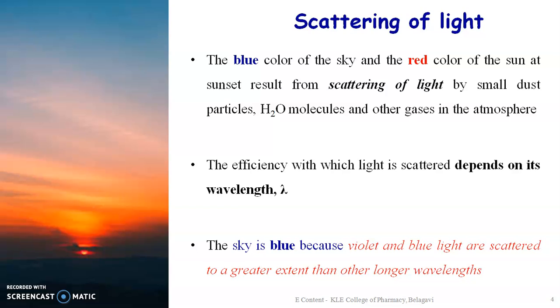The efficiency with which light is scattered depends on its wavelength. The sky usually appears blue because violet and blue light are scattered to a much greater extent than the other longer wavelengths.